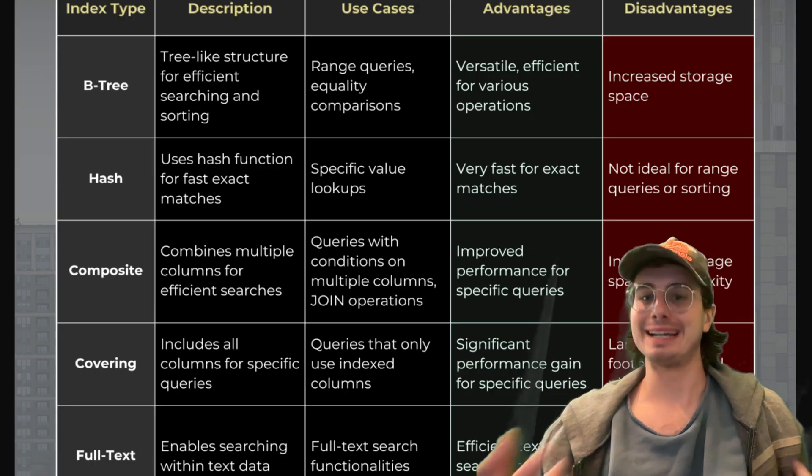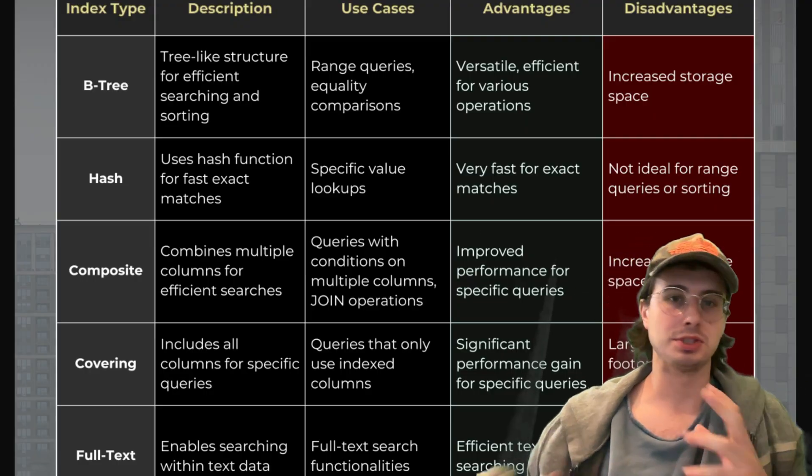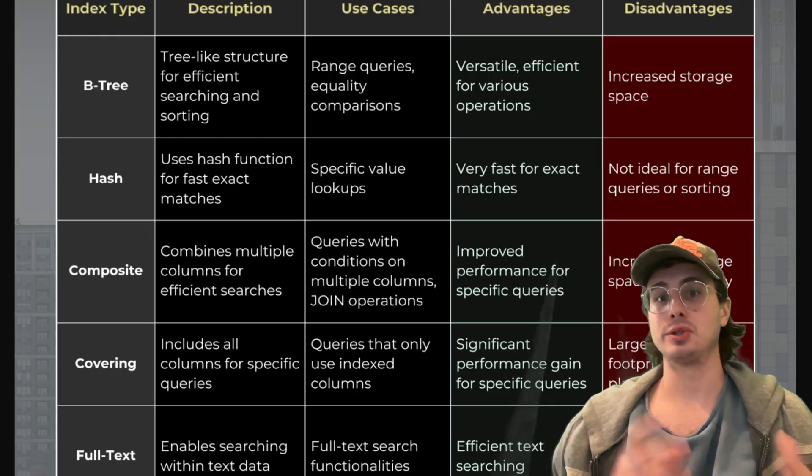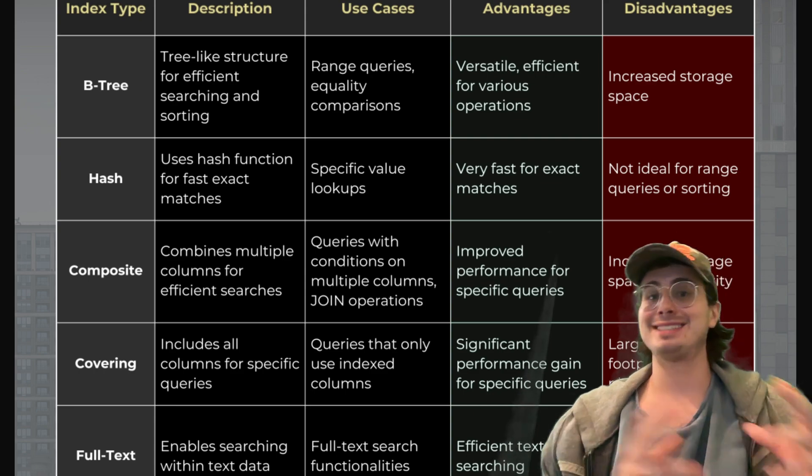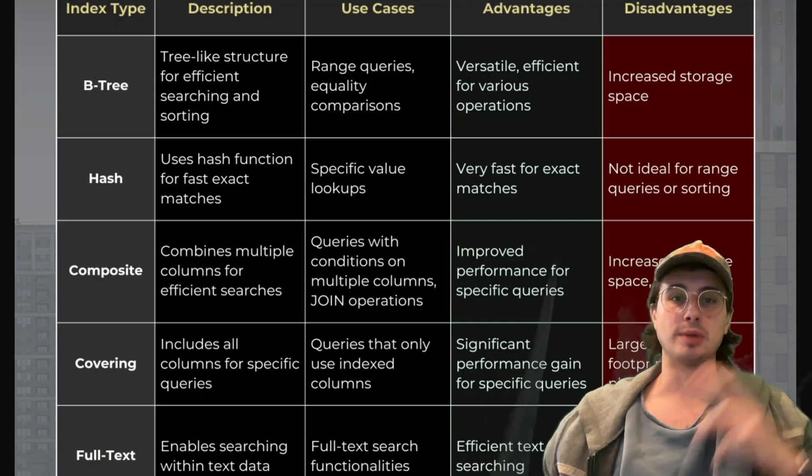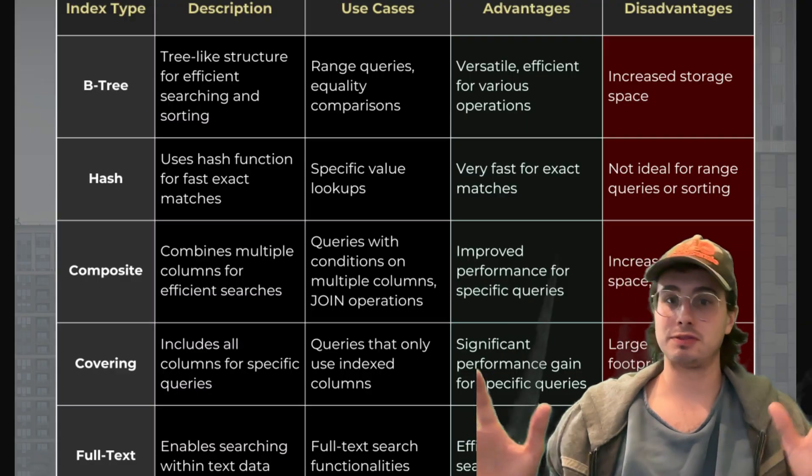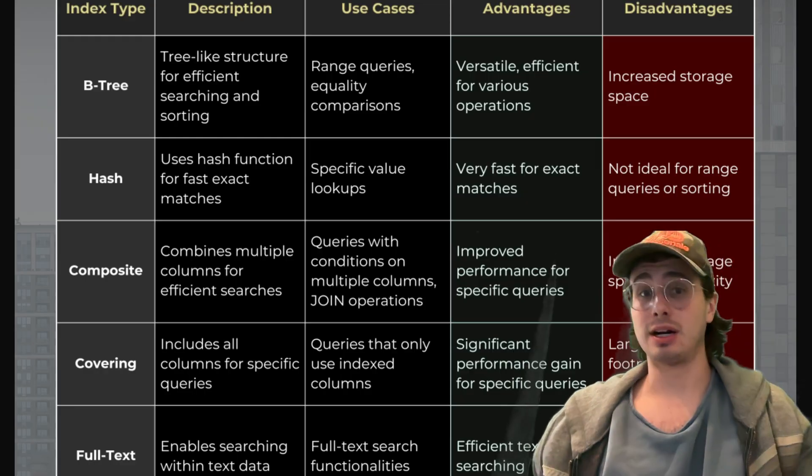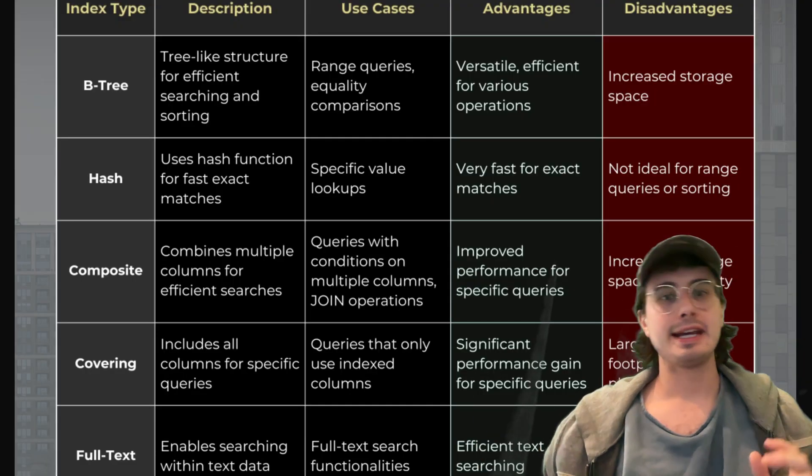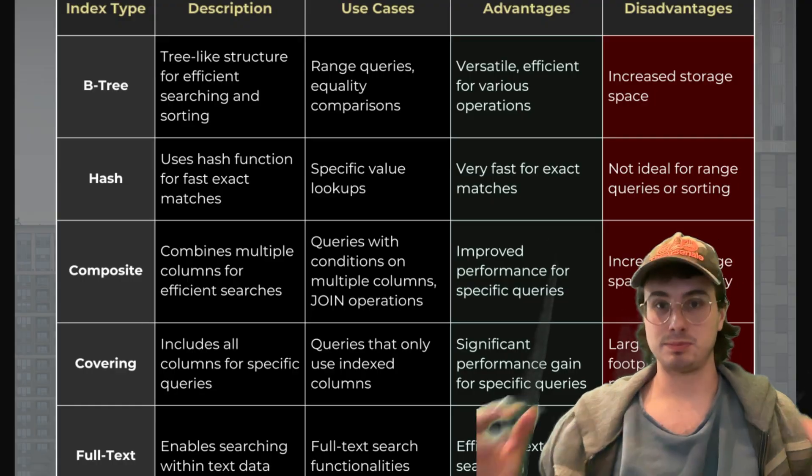Another common topic is indexing strategies - explain index strategies and when to use different types. The most common types are clustered indexes where physical order matches index order (one per table), non-clustered with logical pointers to data rows, composite with multiple columns for complex queries, unique indexes which enforce uniqueness constraints, and partial or filtered indexes for specific conditions.